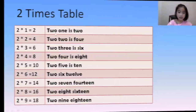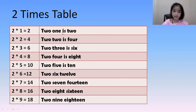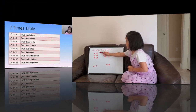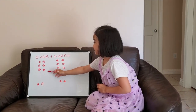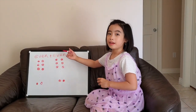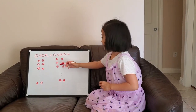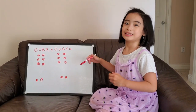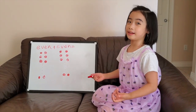2 times 1 is 2, 2 times 2 is 4, 2 times 3 is 6, 2 times 4 is 8. Each even number can be split into pairs, and the other even works the same way.